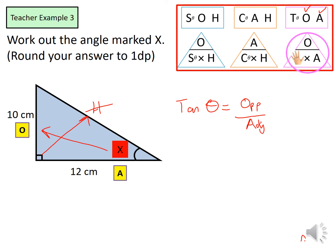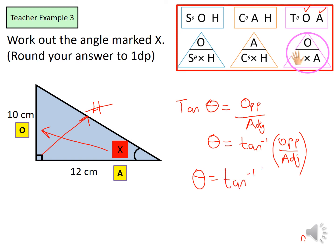To get the angle on its own, we need to use the inverse of tan, which is tan⁻¹, keeping opposite over adjacent the same. Substituting our values: the opposite is 10, divided by the adjacent of 12. Therefore the angle equals 39.8 degrees to one decimal place.